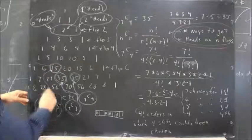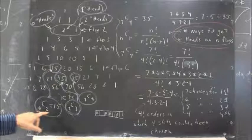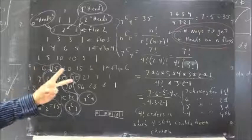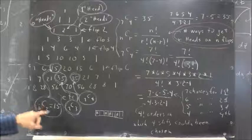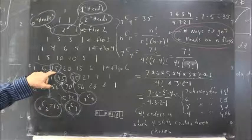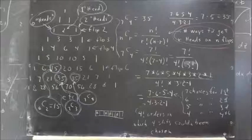So the number of ways to get 2 heads and flipping 6 coins is 6C2. 6C2 is 15, and that does occur in the right position on Pascal's triangle.